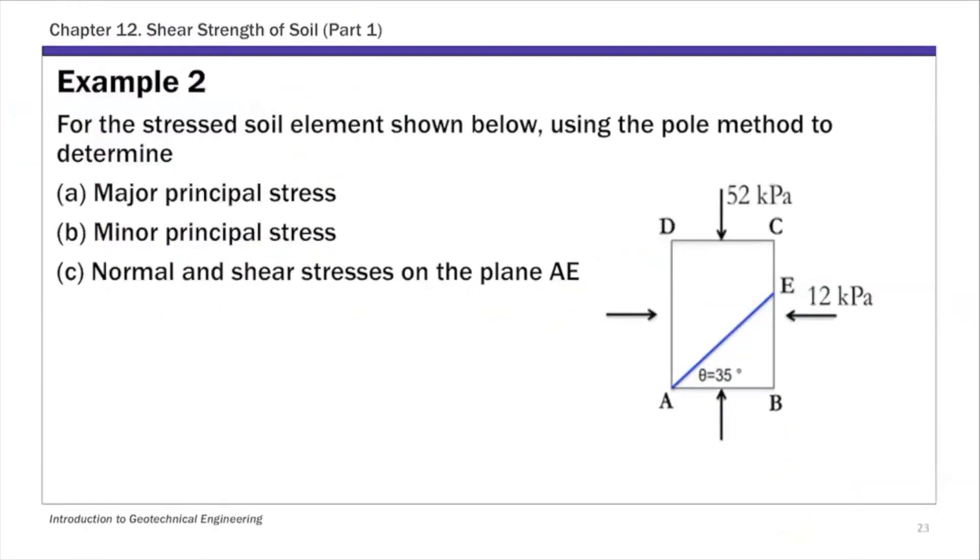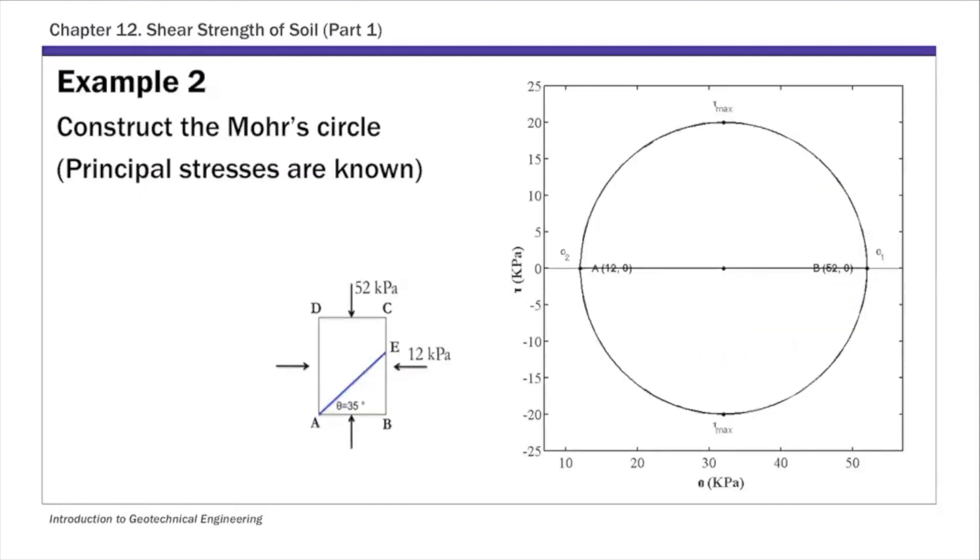For the second example, example two, we're going to use the Pole method again to determine principal stresses and also normal and shear stresses on a given plane. For this example, we're given principal stress values of 52 and 12 kPa. First, we'll construct the Mohr circle using these two principal stresses.